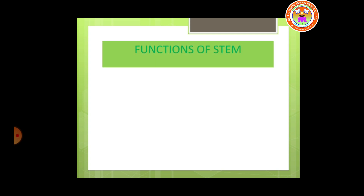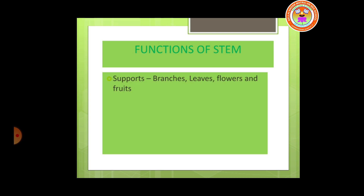Now we are going to see the functions of stem. It gives support to the branches, leaves, flowers and fruit — it helps in supporting the complete aerial part. It also helps in the transportation of water and minerals to the aerial part of the plant. The root absorbs the water and minerals, and the stem transports them to the aerial part.